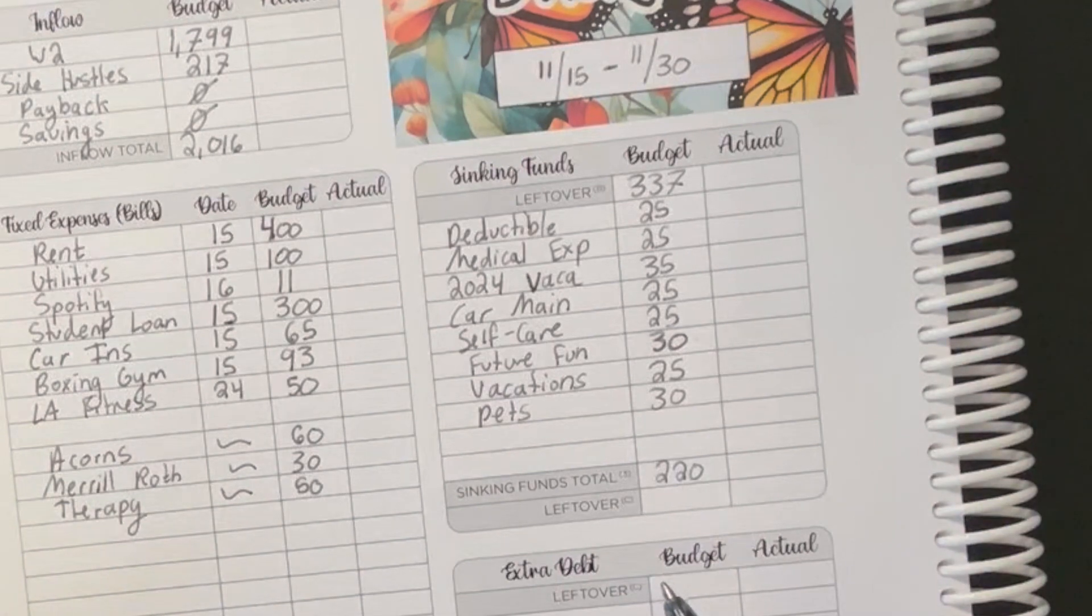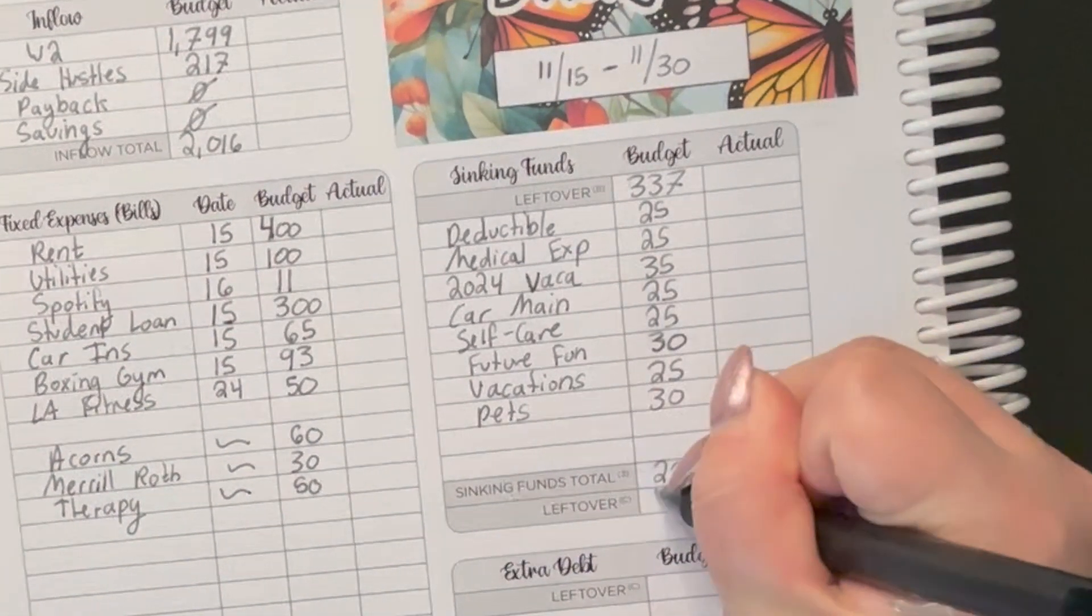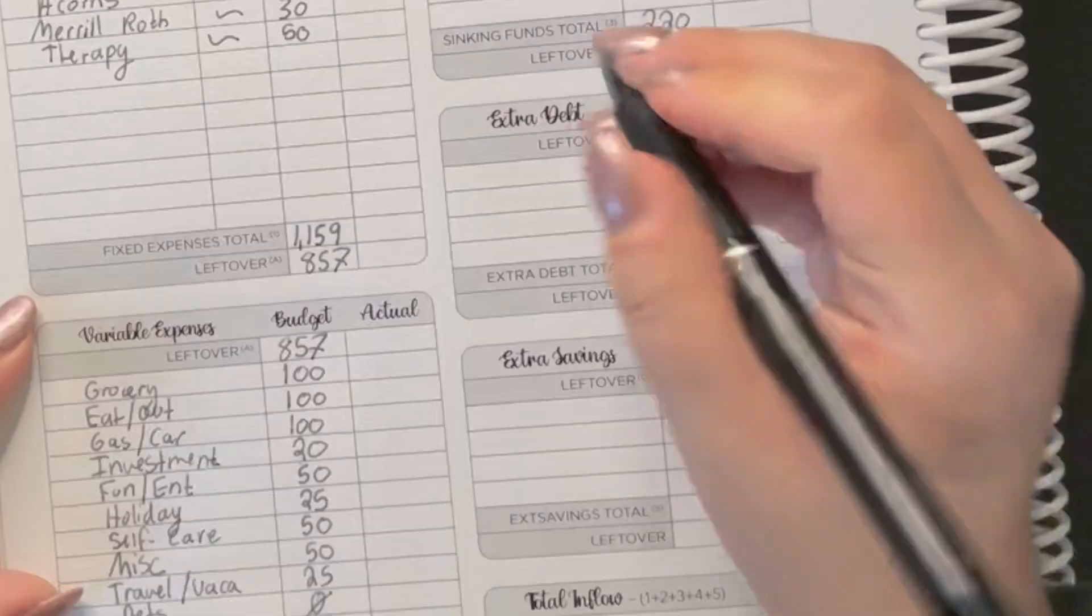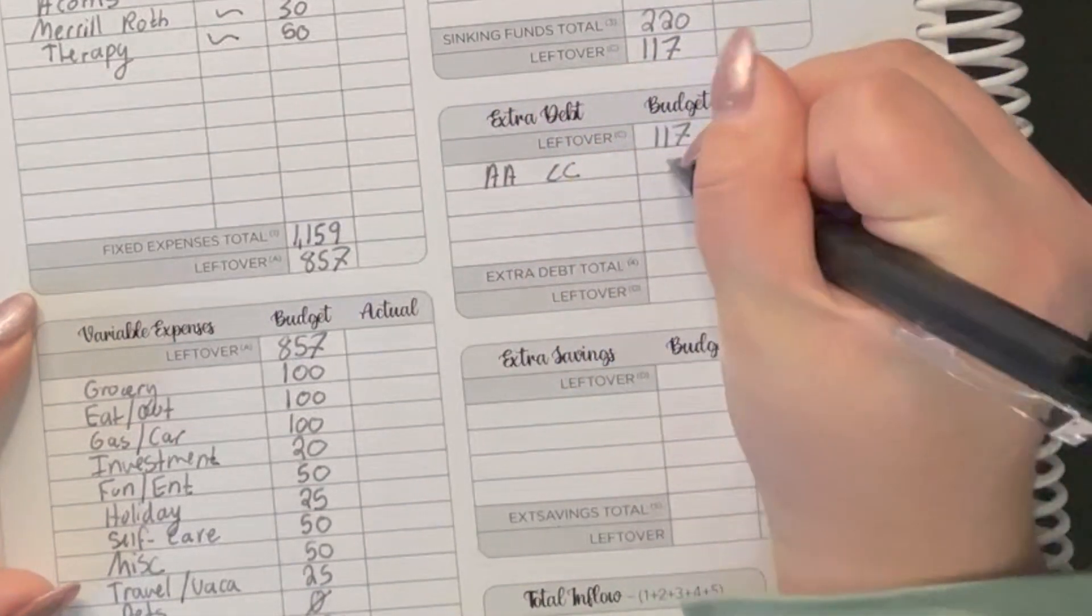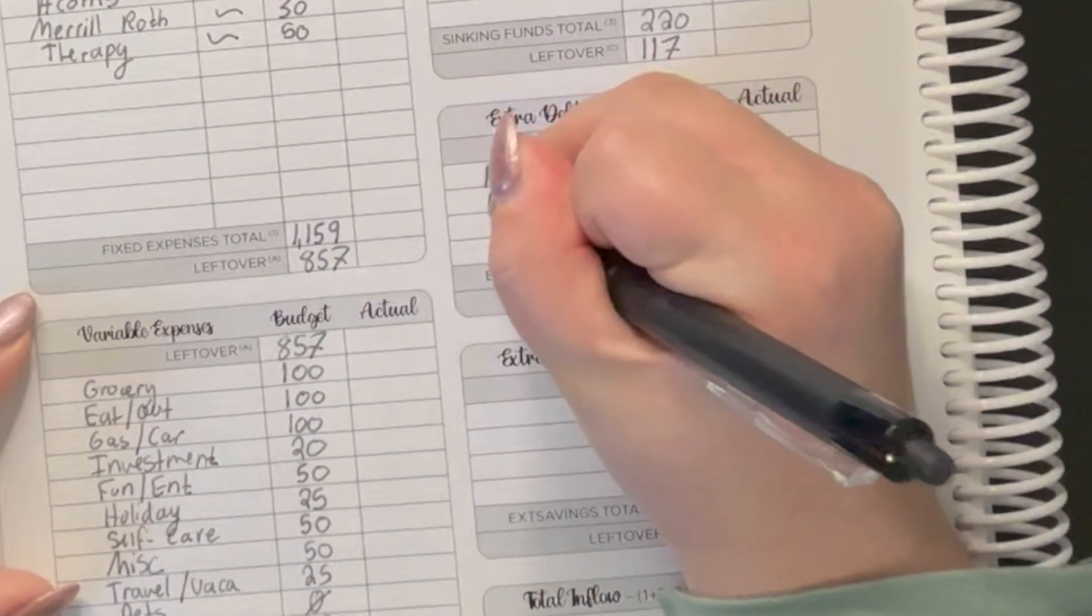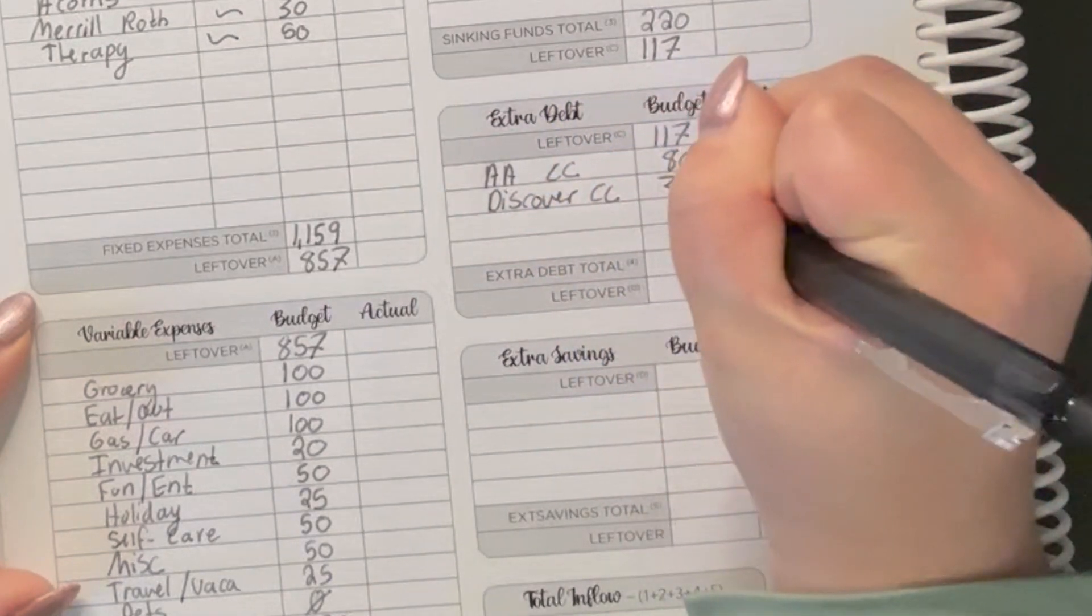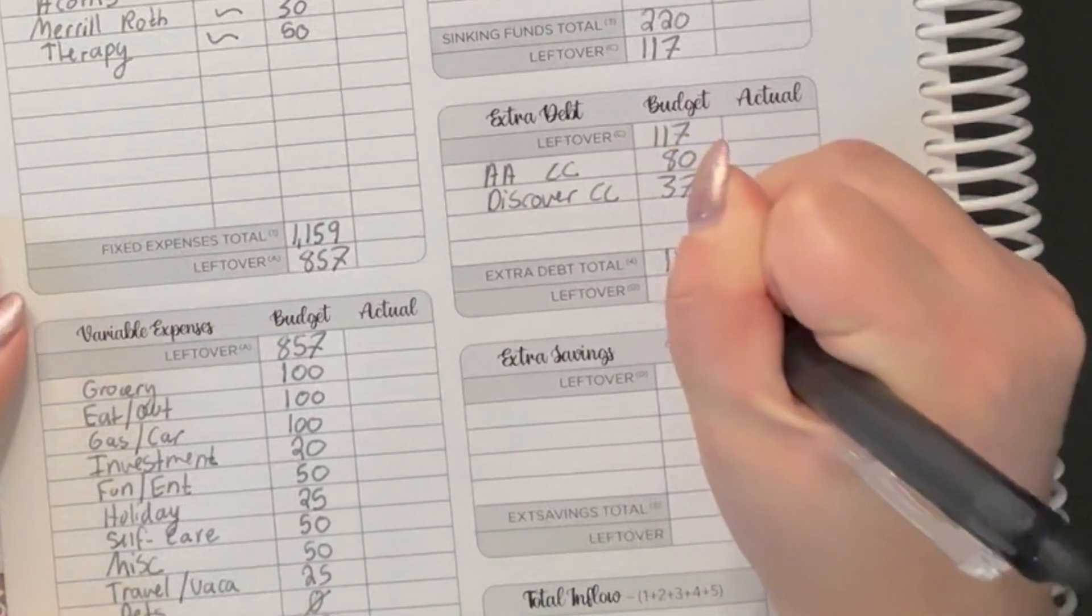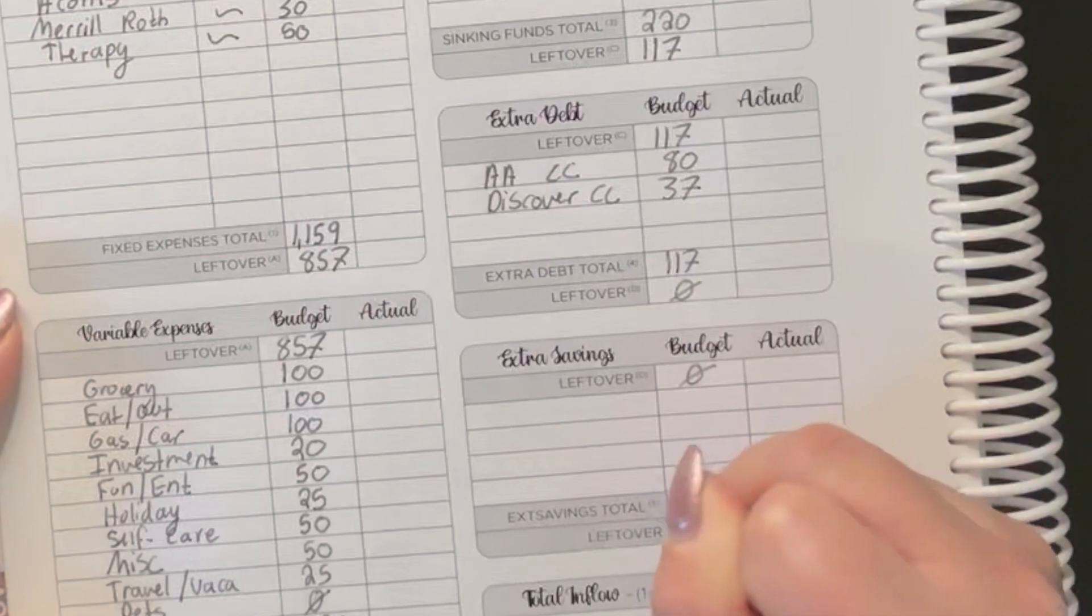So we've got $337, which is what we started with minus $220, which gives us $117 for debt. So we've got my Alaska Airlines credit card, we're going to put $80 towards and then my discover credit card, we're going to put $37 towards. So that will add up to $117 and leaving us with $0 for the rest of the month.